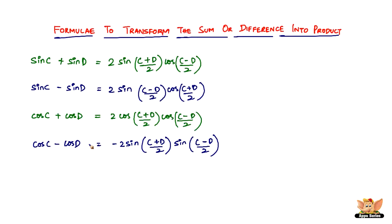So those are the four formulas. Just like the previous transformation formulae that converted product into sum or difference of sines and cosines, this set transforms the sum or difference of sines and cosines into a product — that's the only difference. We'll use these formulas to solve problems in the forthcoming videos based on trigonometry. I'll see you in the next videos with problems based on transforming the sum or difference into product.